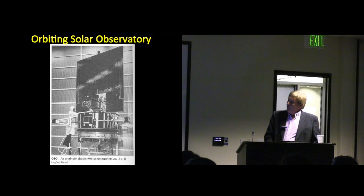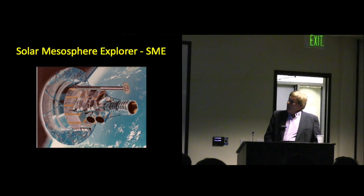The early orbiting solar observatories were some of the first investigations in space that the lab undertook. Having UV spectrometers on board, in this case, the OSO-8 at Hughes Aircraft, human for scale. One of the spectrometers being examined here would probably have been a LASP spectrometer. Another mission that was really key, looking at the sun's influence on the Earth's middle atmosphere, was the solar mesosphere explorer.